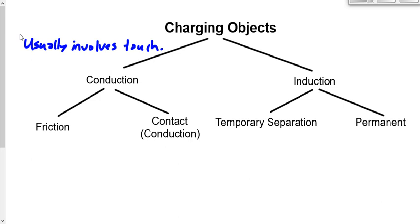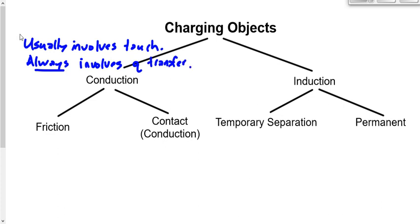If two objects are not touching, you don't know which method it is, so that's not always the best way of differentiating. The better distinction is that conduction always involves a transfer of charge — the symbol Q means charge — whereas induction never involves a charge transfer. Although there is an asterisk: during induction there can be charge transfer within the object being charged, just not between the charging object and the object being charged.